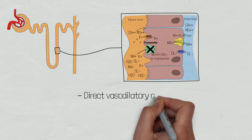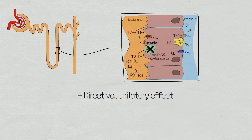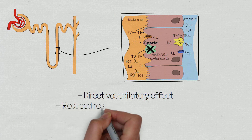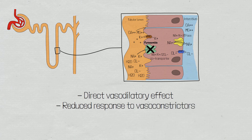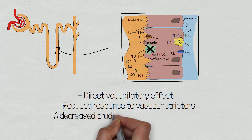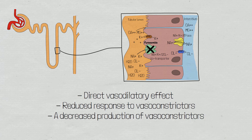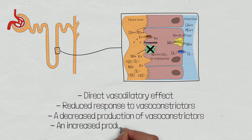Feruzamide also exerts a direct vasodilatory effect which increases its therapeutic effectiveness. However, the exact mechanism by which it does this is not clear. The vasodilation caused by feruzamide is thought to be achieved by reducing the responsiveness to vasoconstrictors such as angiotensin 2 and adrenaline, as well as a decreased production of endogenous natriuretic hormones with vasoconstricting properties. It may also lead to an increased production of prostaglandins which have vasodilating properties.